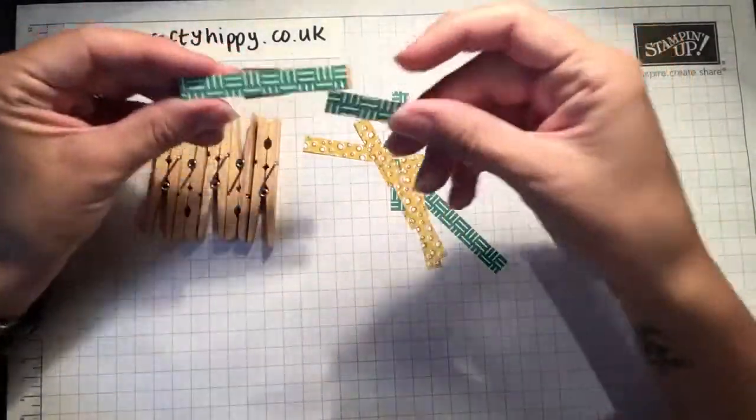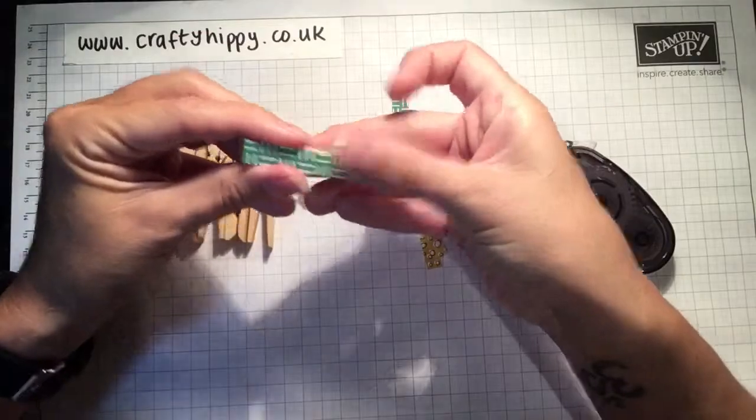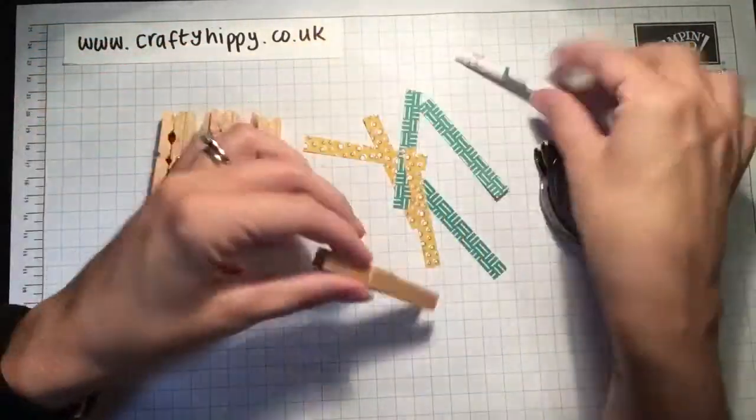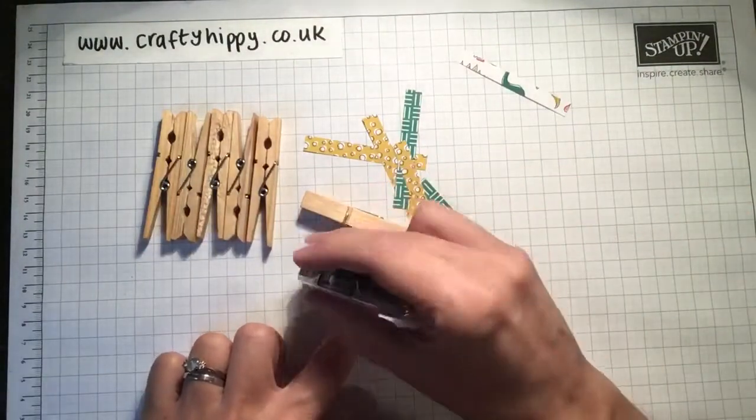You could decide whether to put green on both sides or whether to mix your colors up a bit. I'm really neat so I'm going to do green both sides.